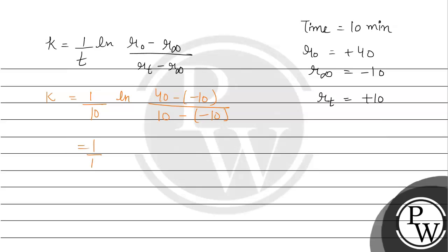So let us solve this, which means 40 plus 10, it comes out to be 50 divided by 10 plus 10, so it will be 20.